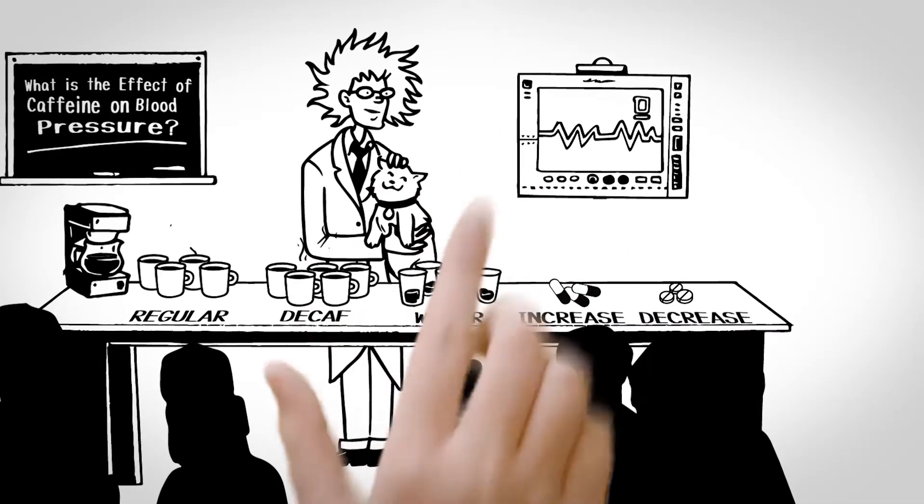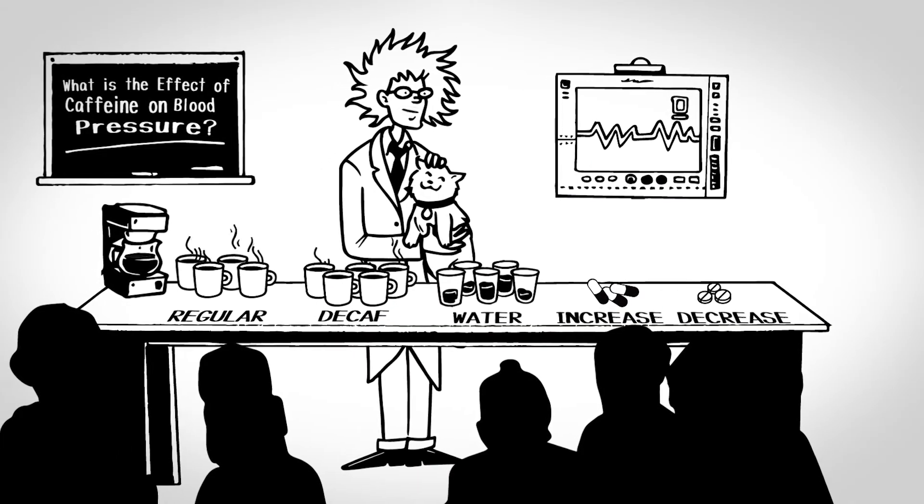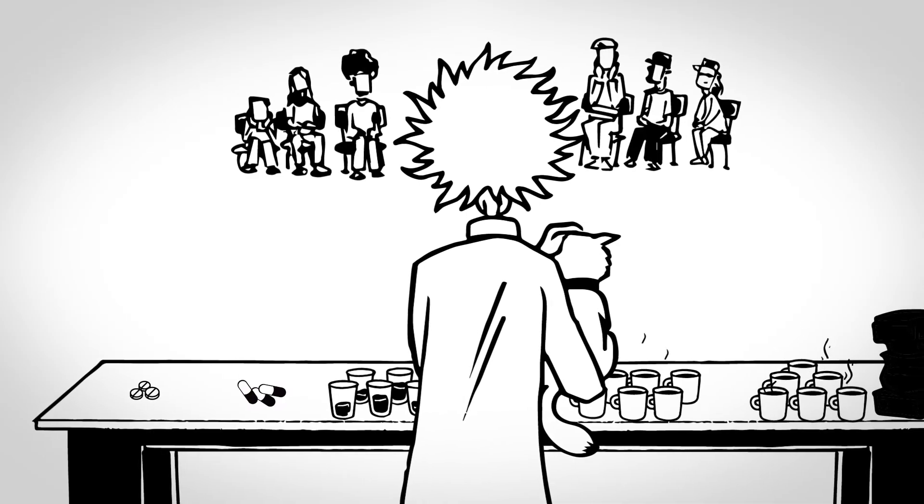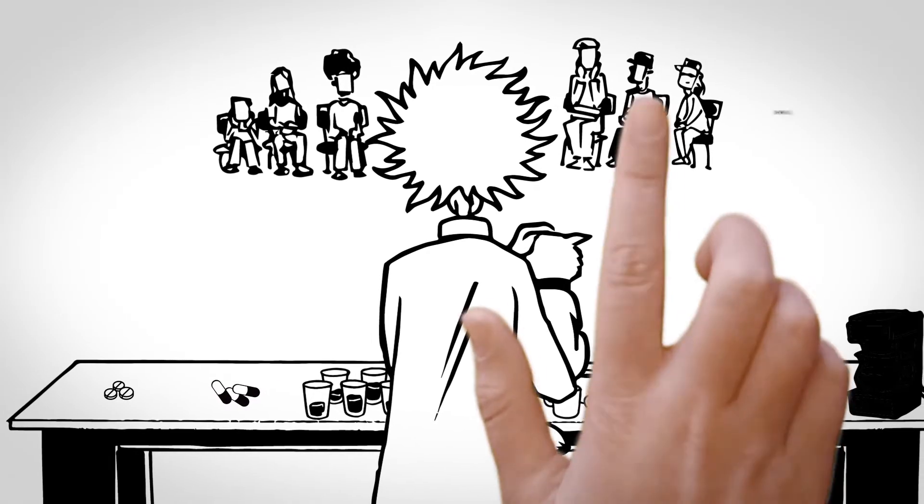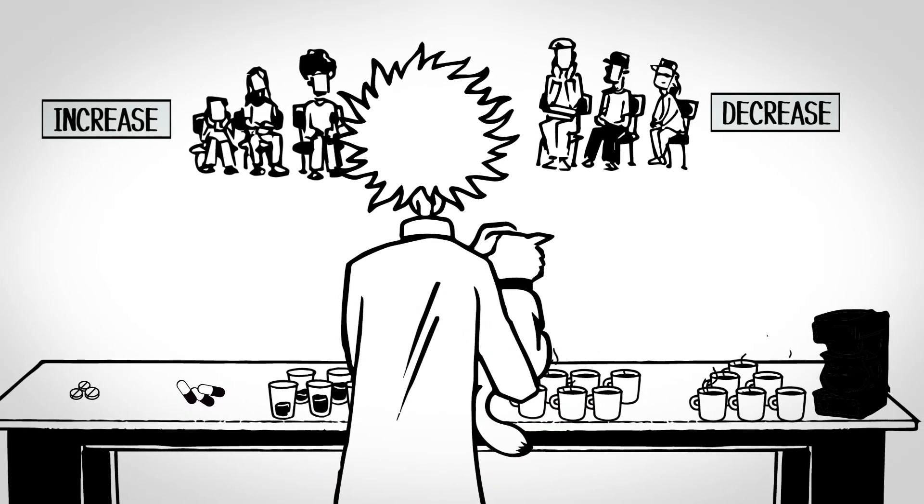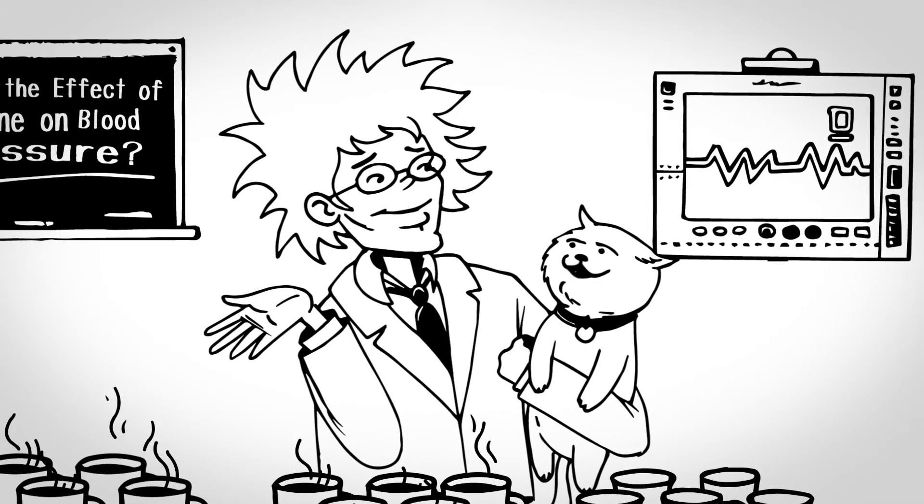Today, my friends, we will seek to answer a question. What is the effect of caffeine on blood pressure? In addition to the three negative control groups and the group drinking coffee, you folks will be given a drug which is known to decrease blood pressure. And you people will be given a drug which is known to increase blood pressure. Those are our positive controls.